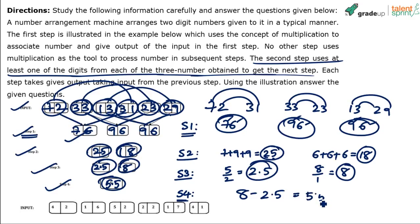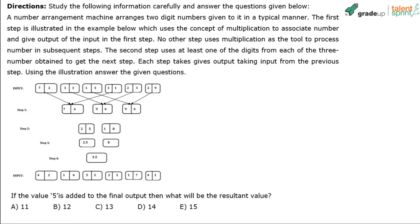We subtracted the first number from the second: 8 minus 2.5 equals 5.5. So step 1 links numbers with arrows and cross-multiplies digits; step 2 sums all tens places and all units places; step 3 divides units place by tens place; step 4 subtracts the first result from the second. Now we apply the same process to the given input: 42, 16, 52, 22, 17, 41.